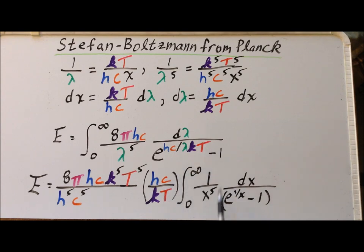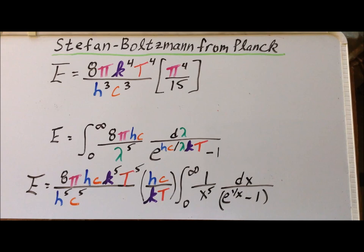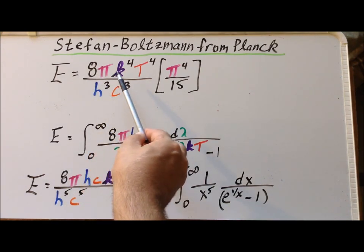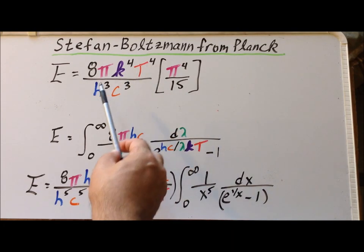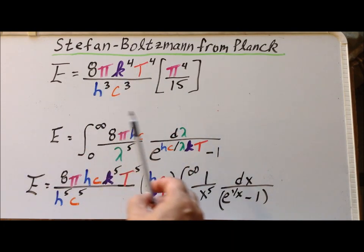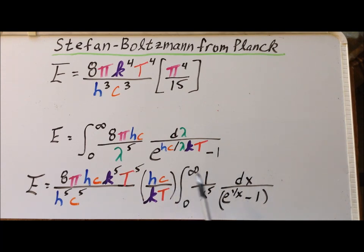I did not show changing the limits of integration, but if we integrate from λ equals 0 to λ equals infinity, we may be integrating from x equals 0 to x equals infinity. So the limits of integration are exactly the same. The important part is that we get this integral, which is a well-defined and well-known integral. Canceling the various terms on the left-hand side of the integral, we get 8π k to the fourth T to the fourth over h to the third c to the third, and the value of this integral from 0 to infinity is π to the fourth over 15.